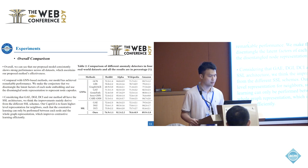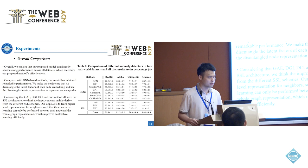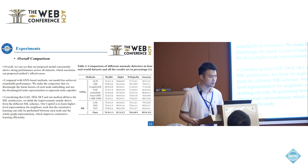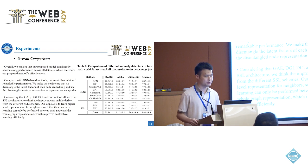Comparing with GNN-based methods, our method achieves remarkable performance. We conjecture that disentangling the latent factors of each node embedding and using disentangled node representations to represent node capsules is key. Additionally, comparing with GNE, DGI, DCI, and our method within a self-supervised learning architecture, the improvements mainly derive from different semi-supervised learning schemes. Our CapsGI learns higher-level representations for neighbors, so that contrastive learning is performed between each node and the whole graph representation, improving contrastive learning efficiency.